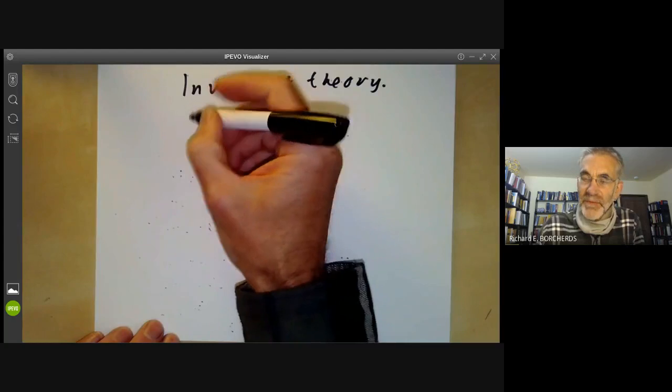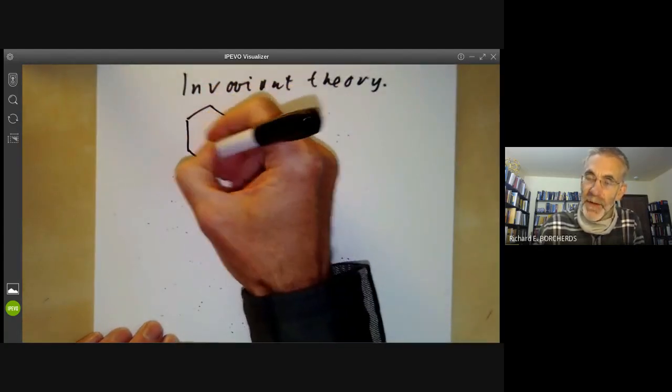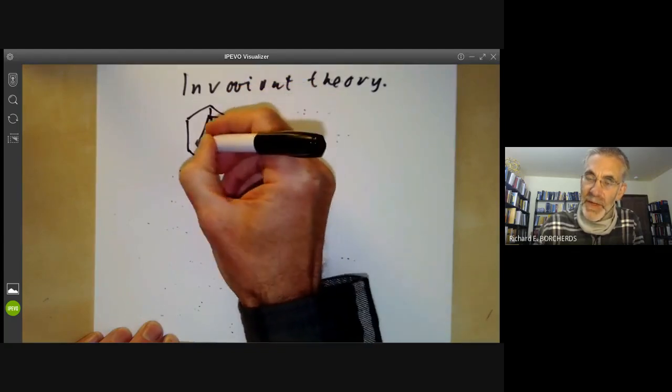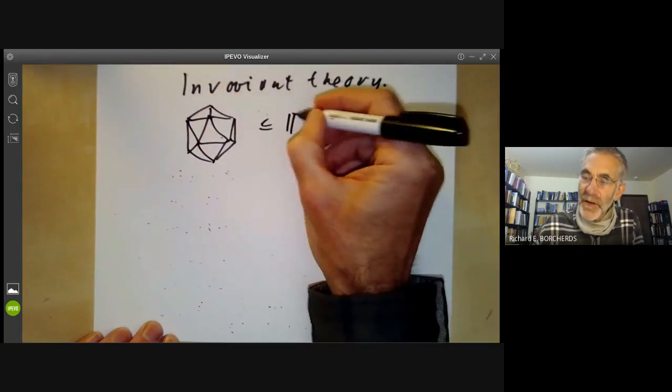Suppose you take some sort of platonic solid. You might take an icosahedron, looking like this, sitting in three-dimensional space. We have an icosahedron in R³.